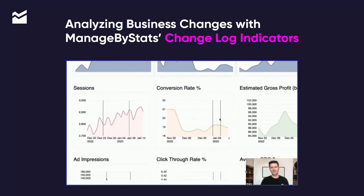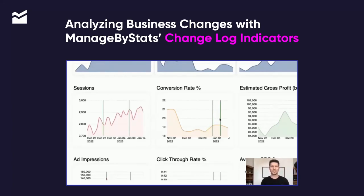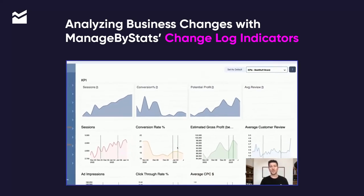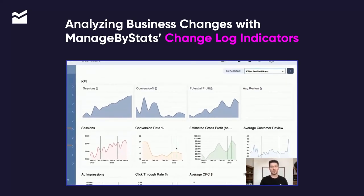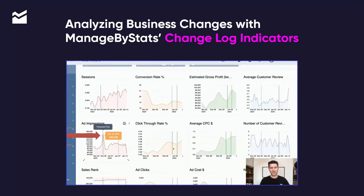These little green lines on each of these graphs is a change log indicator. So when you're making changes to something — you're doing a split test or you're launching a product, changing something in your advertising — you want to take note of important changes to your business, and you can add these to the graphs and they'll actually show up.